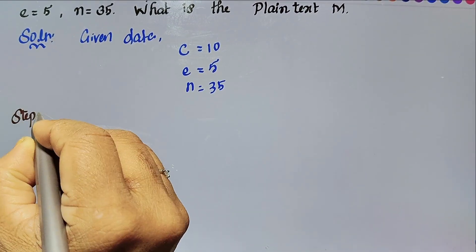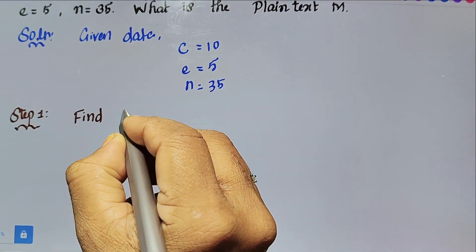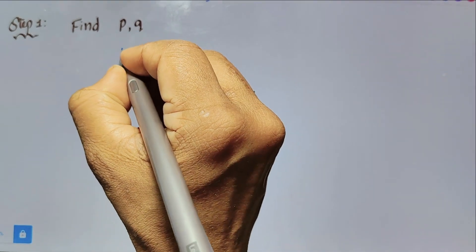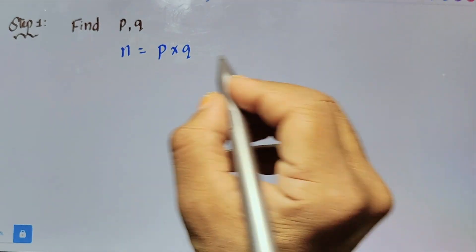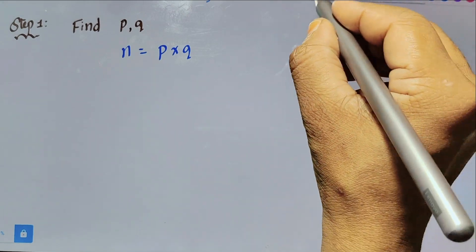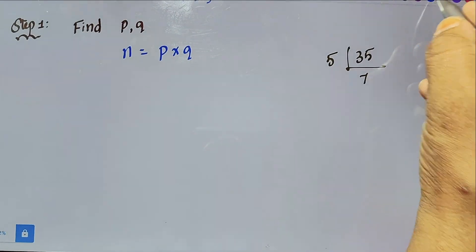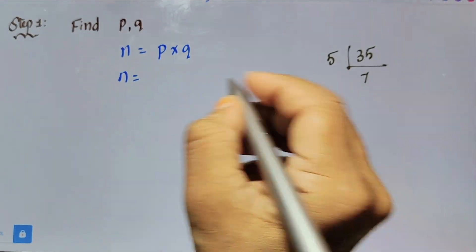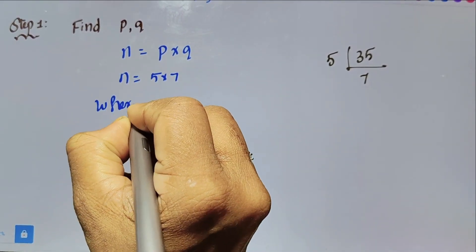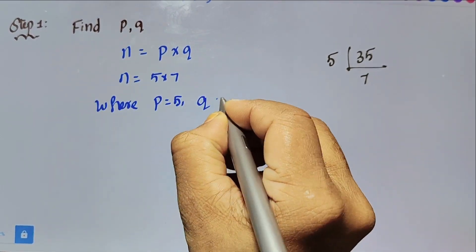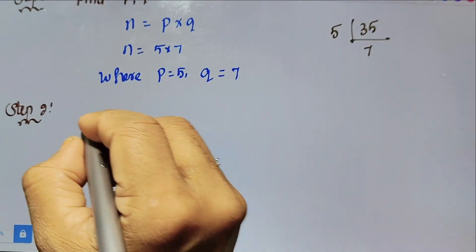Step 1: Find p and q by using the formula n equal to p into q. Here n is the size of the key and p and q are the largest prime numbers. Since n is given as 35, and 5 into 7 is 35, we get p equal to 5 and q equal to 7.